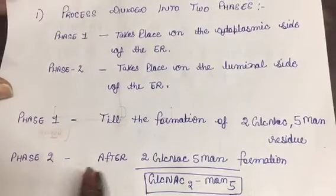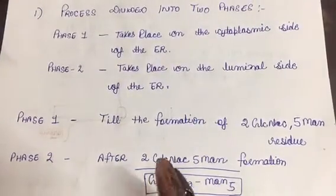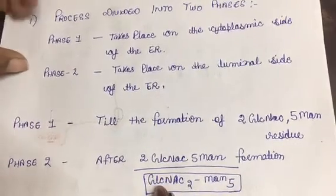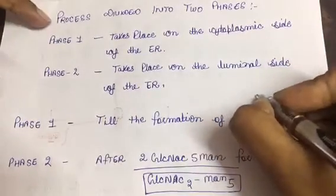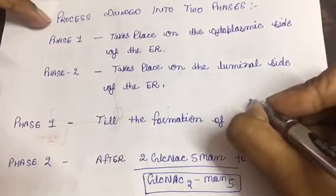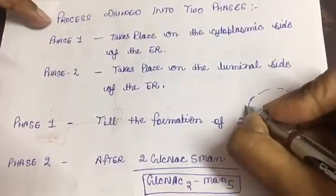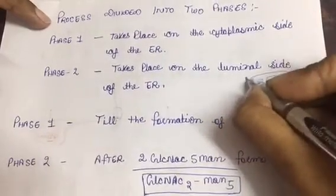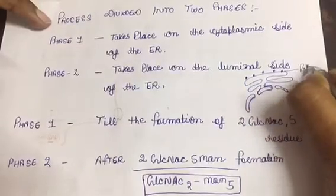Phase two is occurring on the luminal side of endoplasmic reticulum. If I draw the structure of endoplasmic reticulum, it's going to be like this: here is the nucleus in the middle, and here are ribosomes. These are ribosomes.